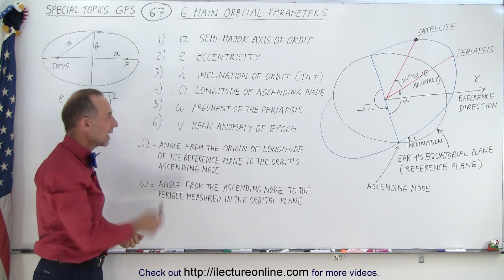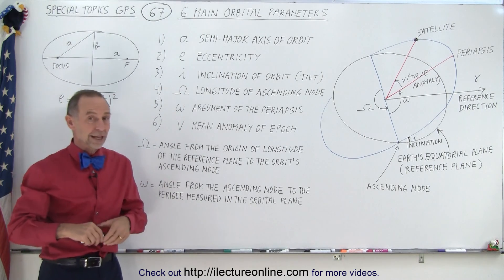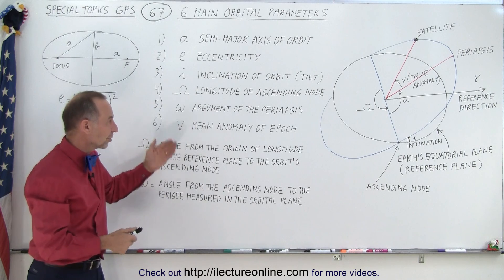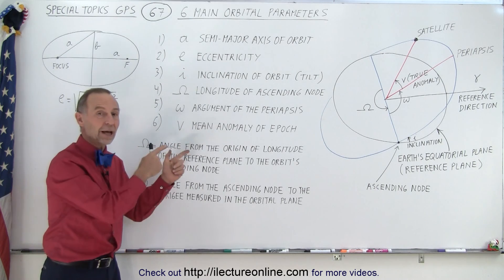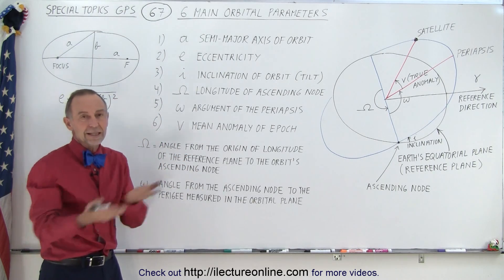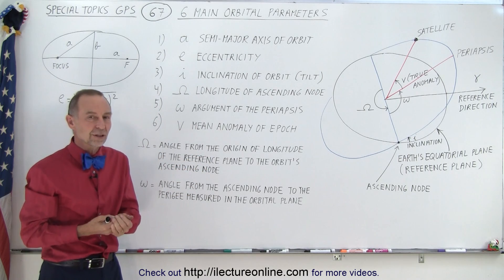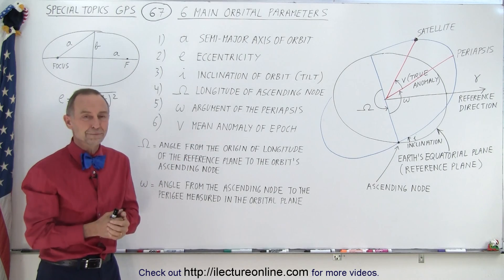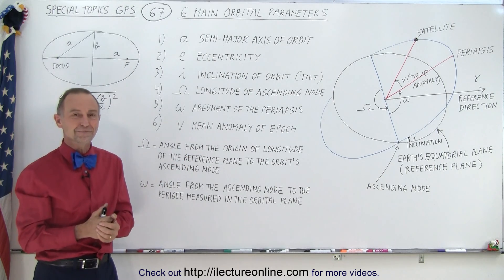and it will always contain these six parameters and more. And we'll talk about, of course, all the various things that are in there, but those are the six main parameters, and now you understand what they are. So when you see them in the message, in navigation message, in subframe 2 and 3, now we know what they mean and why they're there, and that is how it's done.